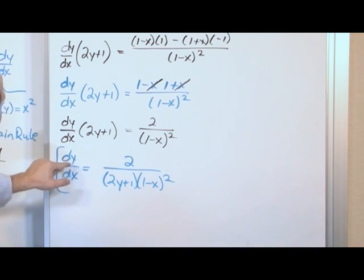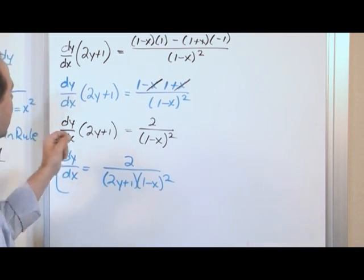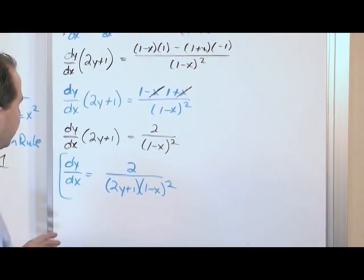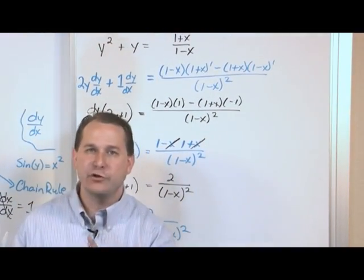Now, notice that this is the derivative of y with respect to x. In order to actually calculate a value, a numerical value for the slope of our original curve, which is a derivative, we'll have to supply an x and a y point, a point on this relation, on this function.